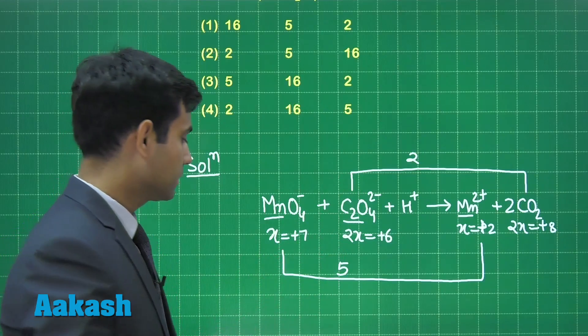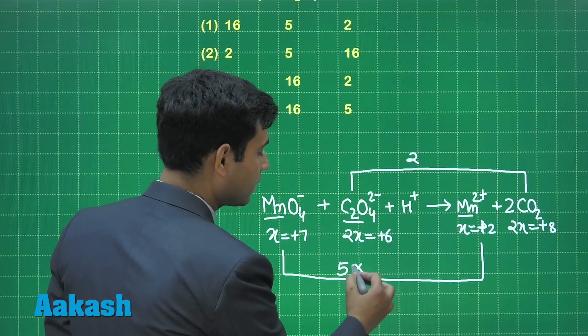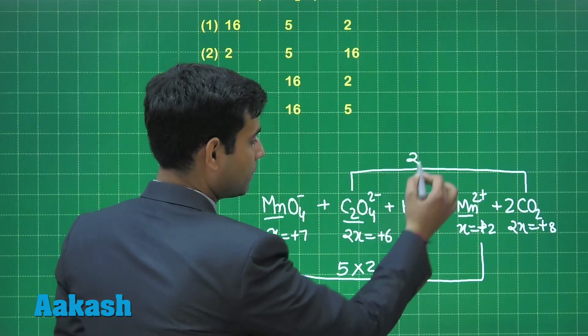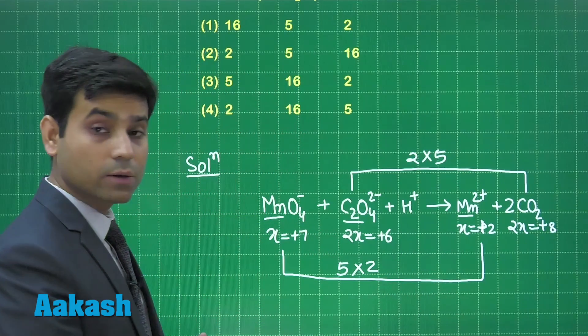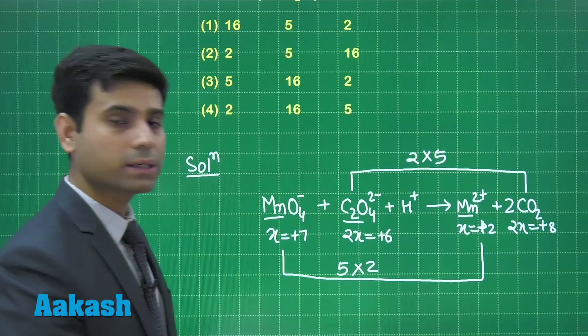Cross multiply these, multiply this equation by 2 and multiply this equation by 5. Multiply these values and write the equation again.